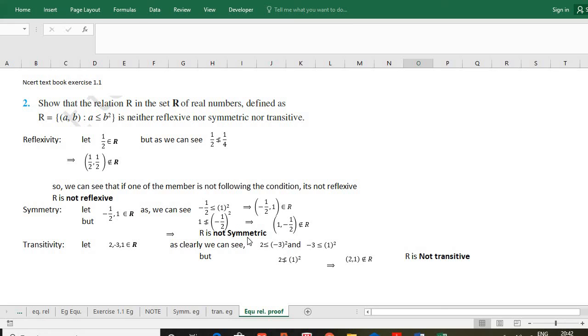Next we will check transitivity of the relation. In this we will take minimum 3 members. Suppose I have taken 2, -3, and 1. In transitivity we take members such that they are connected under the given relation. Here we can see 2 and -3 are connected because 2 is definitely less than or equal to (-3)².